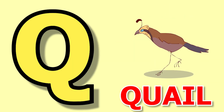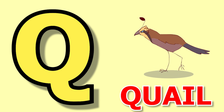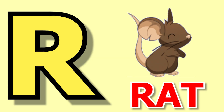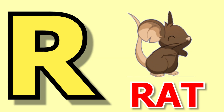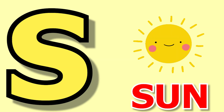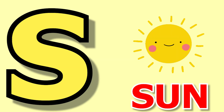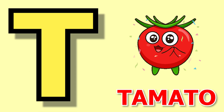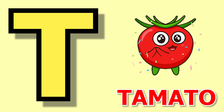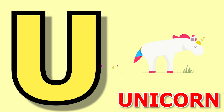Q for quill, quill means quill. R for red, red means chuha. S for sun, sun means surya. T for tomato, tomato means tomato.